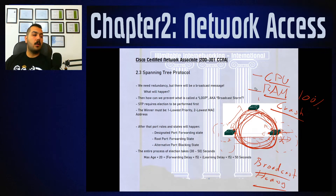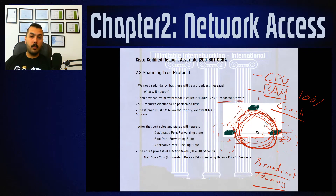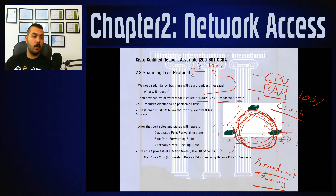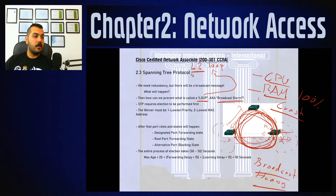This entire scenario — being unable to control and stop the broadcast message — is called a broadcast storm. Another term you will use in real networking environments is a loop, or more specifically a layer two loop, because it happens due to the normal default switch behavior.